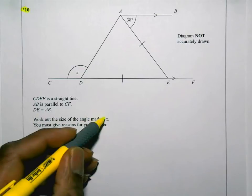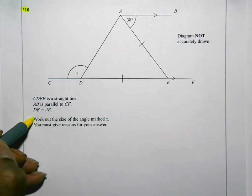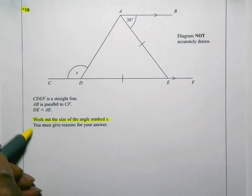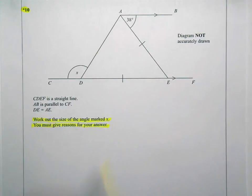Work out the size of the angle marked X. So they want us to work out the size of the angle marked X, and you must give reasons for your answer. At each stage, we need to indicate the reasons for the answer.